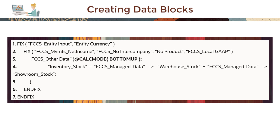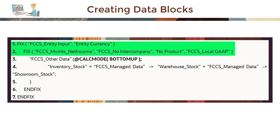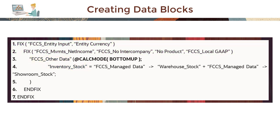Here, we fix on sparse members, anchor on the sparse member FCCS Other Data, and write to the dense member Inventory Stock. Ensure that the expression uses data blocks and results in data that can be returned to the dense member. The bottom-up execution mode is used for best performance.